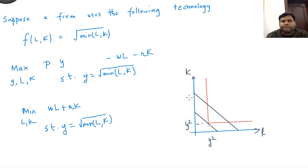If L and K are y squared, then these are also known as conditional input demand functions. So conditional input demand function is L equals y squared, K equals y squared.